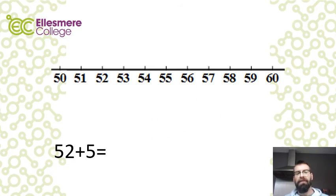We'll instead draw a number line out from fifty to sixty. This should help us. And then the technique is just the same as it was with the smaller numbers. We find fifty-two and then we count on five.